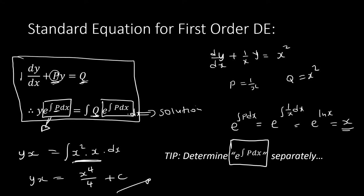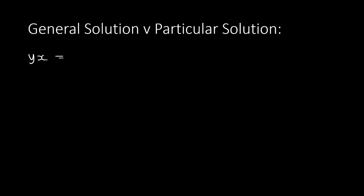You don't have to divide by x — you leave the answer as is. That's your solution. Now, the first thing we must be able to do is differentiate between general solution and particular solution. Your questions will specify which one they want. The answer y·x = x⁴/4 + c — this c is what makes it a general solution.